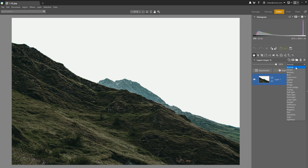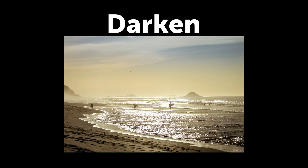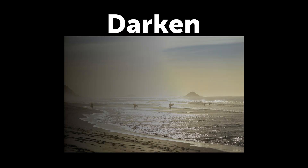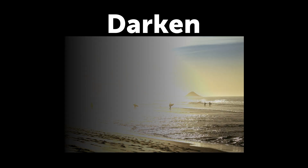Four blending modes can darken the photo in different ways. The first is Darken. It selects the darker sections or pixels from the first and the second layers and shows them. Simply put, it only shows the dark sections, and this makes it good for replacing the sky.